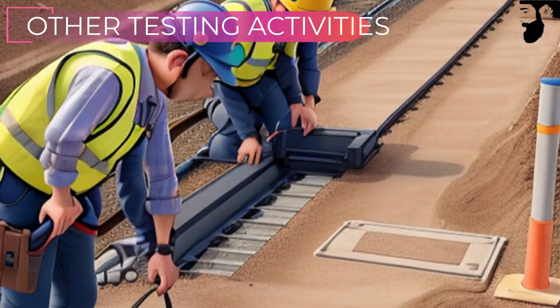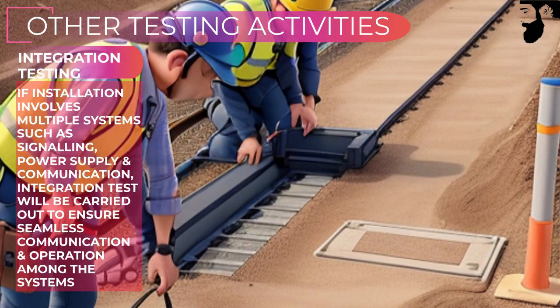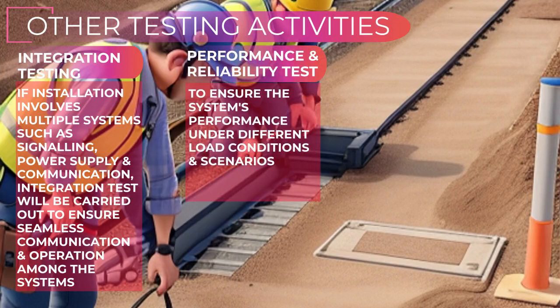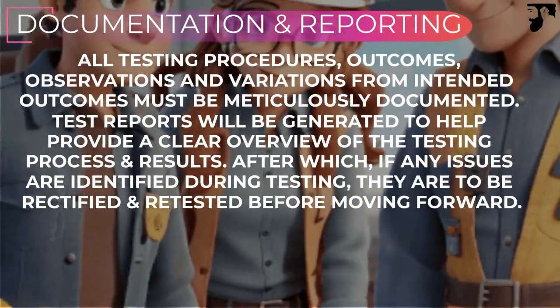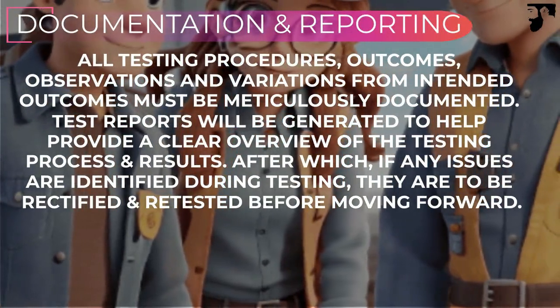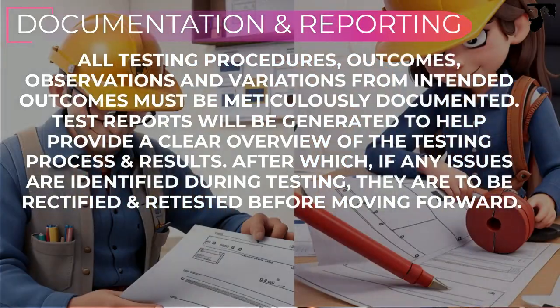Other tests involve integration testing. If the installation involves multiple systems such as signaling, power supply, and communication, integration tests will be carried out to ensure seamless communication and operation among these systems. Performance and reliability testing is another type of test to ensure the system's performance under different load conditions and scenarios. All testing procedures, observations, and variations from intended outcomes must be meticulously documented, and test reports will be generated to provide a clear overview of the testing process and results.